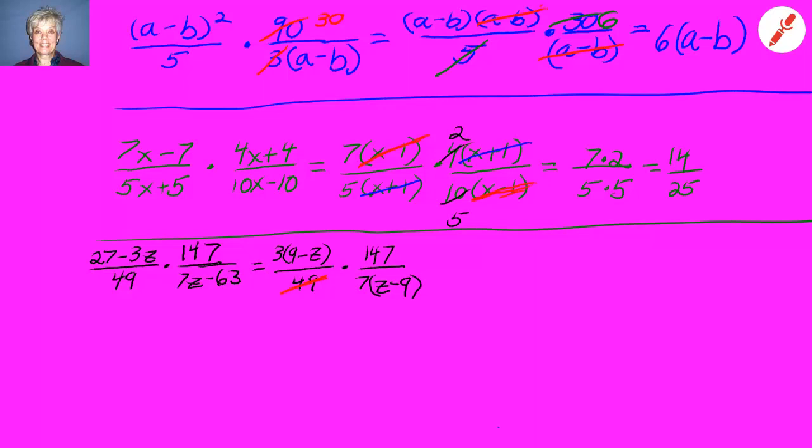49 will go into 147 three times. So we'll have 3 times 3 over 7 times 9 minus z over z minus 9.